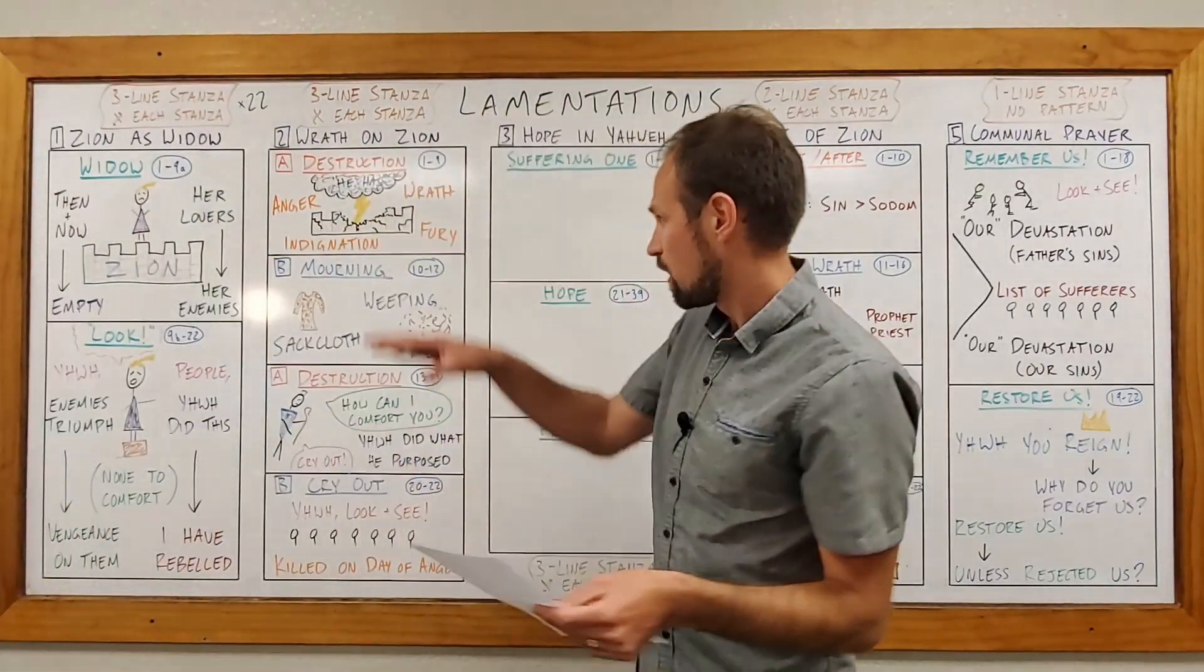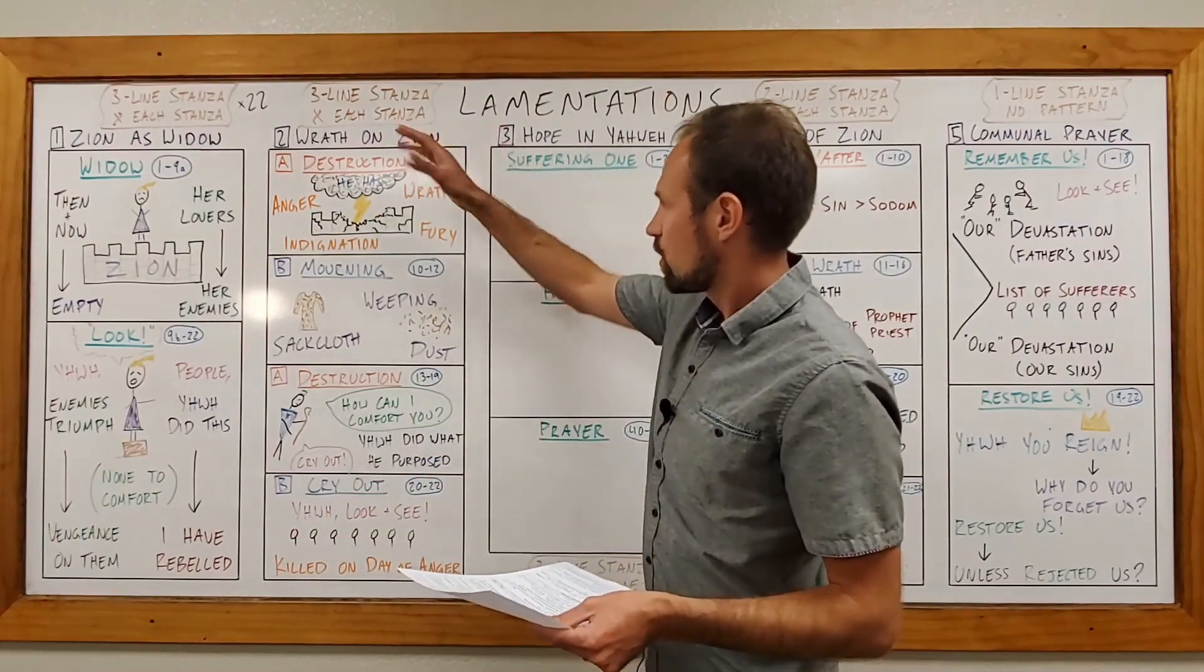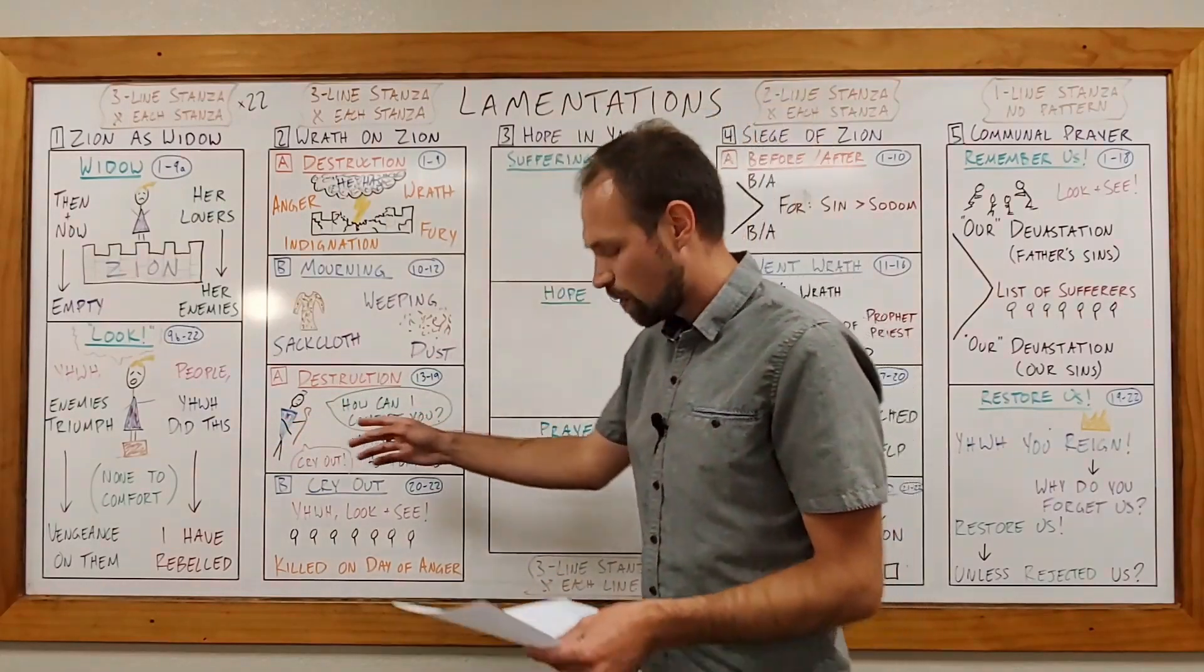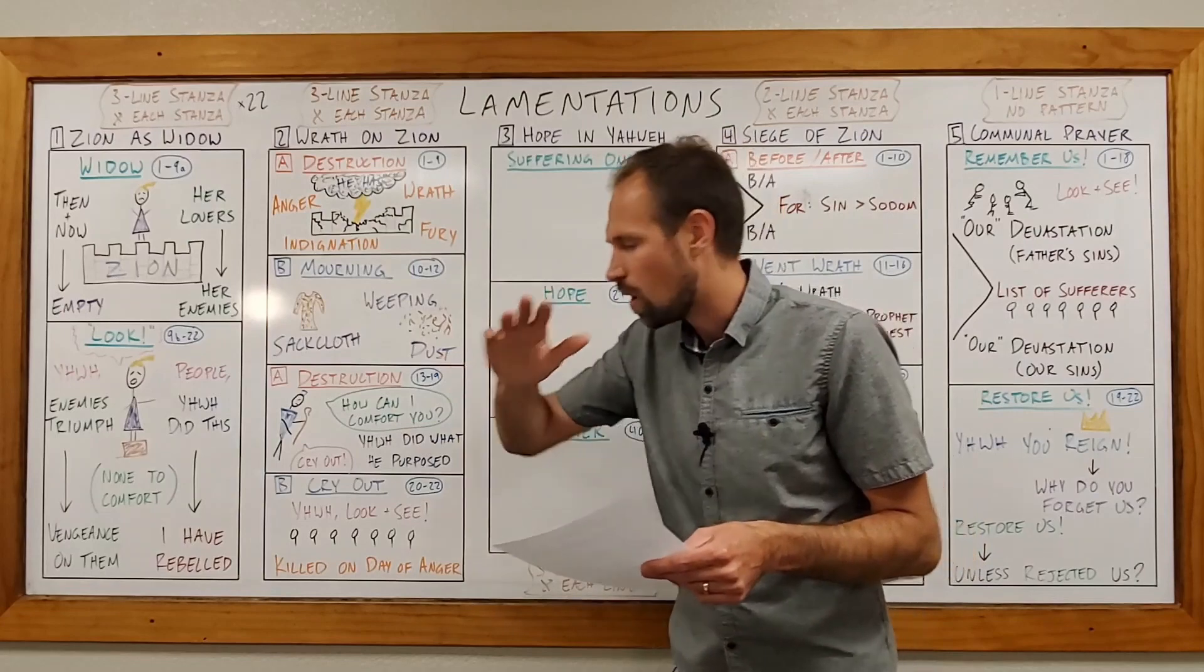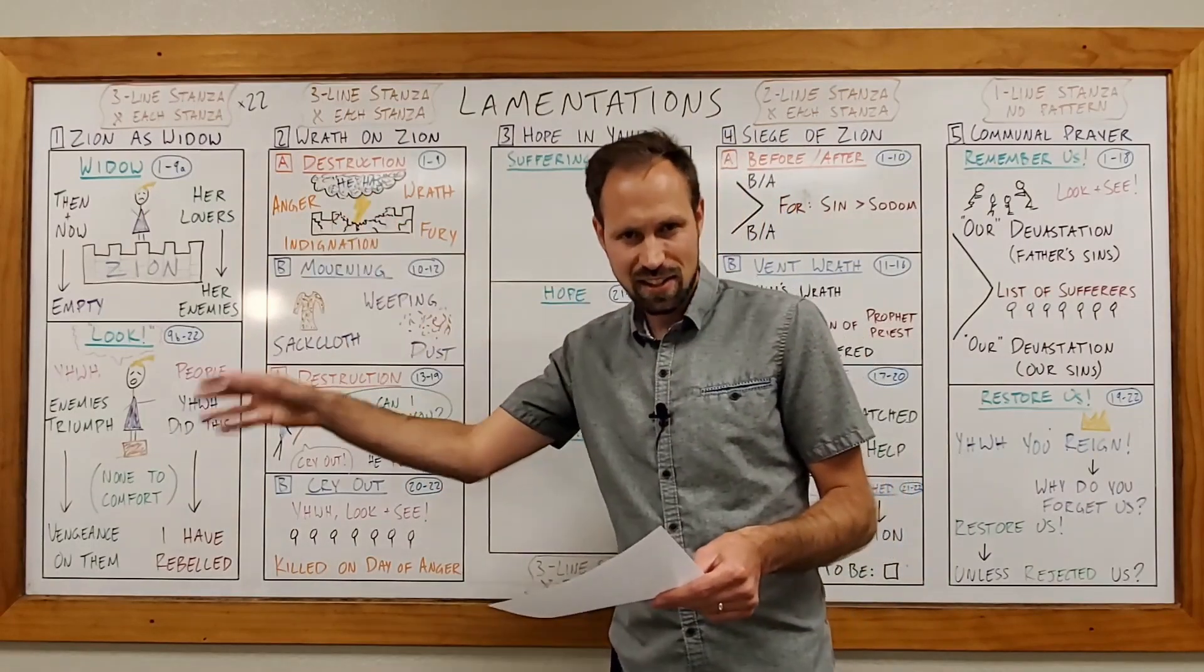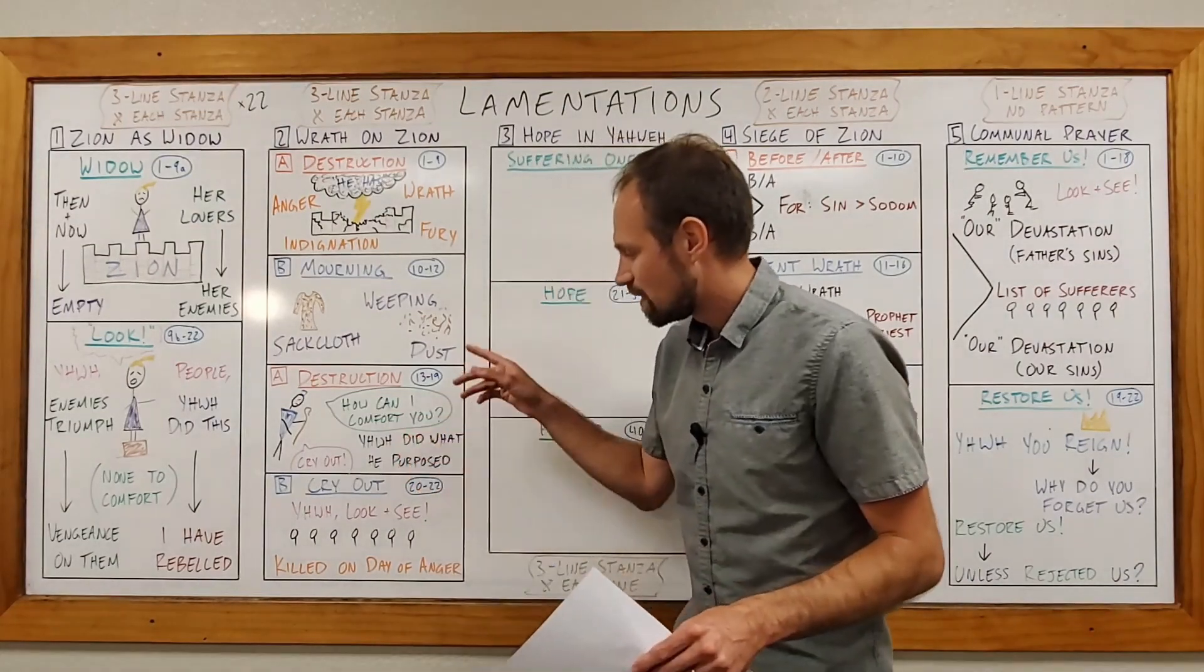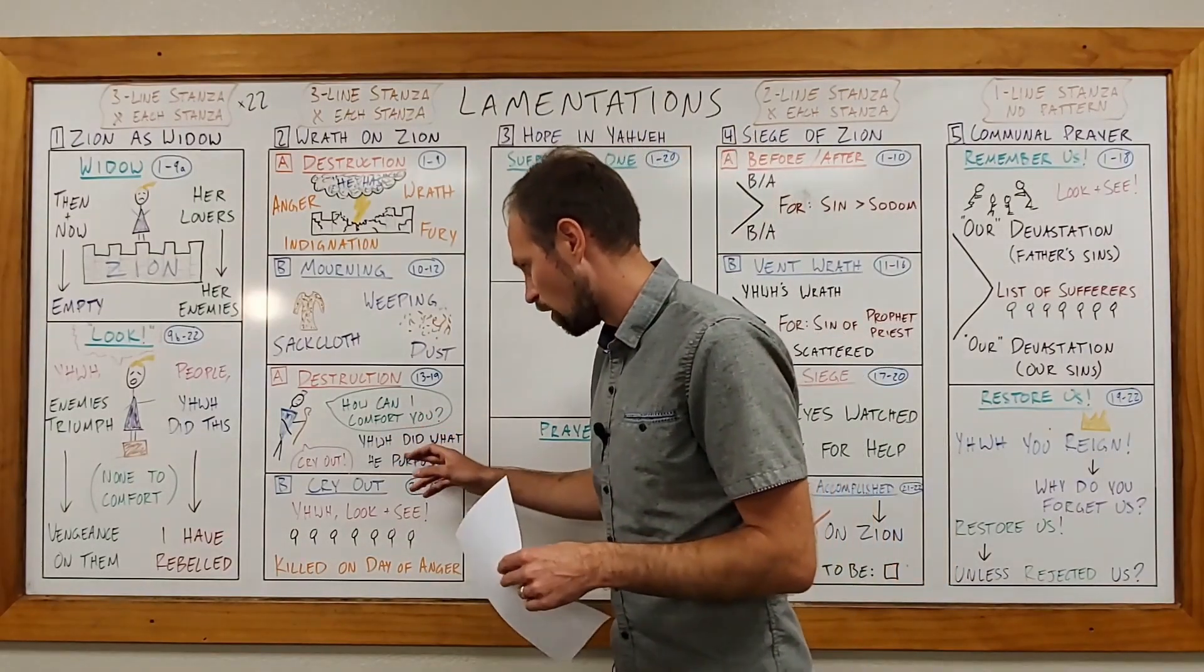Well, the rest of the poem, the rest of chapter two is going to follow an A-B-A-B pattern where there's a discussion of destruction, then mourning, then destruction, and then mourning or crying out again. And in this second destruction section, the poet is going to speak. The poet is going to ask a really powerful question. He's going to ask, what can I say for you, O daughter of Jerusalem, that I may comfort you? For your ruin is as vast as the sea. How can I comfort you? No one can comfort you, the poet says. And then he concludes with this interesting statement. He says that the Lord has done what he purposed. He carried out his word, which he commanded long ago.